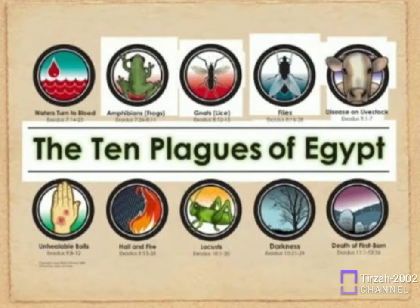Flies — Swarms of flies cover the land. The result: Pharaoh promises to let the Hebrews go, but then hardens his heart. Exodus 8:20-32. Plague 5.